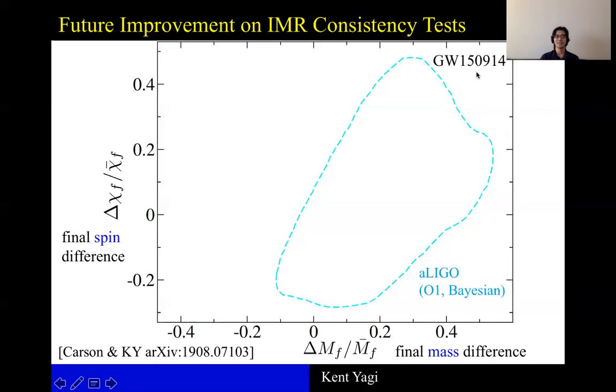Now, imagine that we have Cosmic Explorer in the future. Then we should be able to shrink this error ellipse to this tiny red one here. We can zoom into this region. Furthermore,